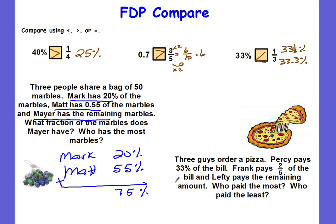If I add their percents together, they have a total of 75 percent. All of the marbles together is 100 percent. To find out how much Mayor has — what's left over — I take 100 percent and subtract 75 percent and get 25 percent. So Mayor has 25 percent.